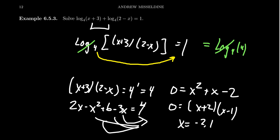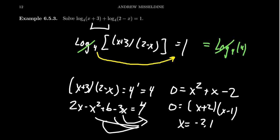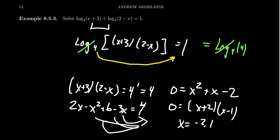We should check both solutions. For x equals negative 2: the arguments become negative 2 plus 3 equals 1, and 2 minus negative 2 equals 4 — both positive, no domain issues. Log base 4 of 1 plus log base 4 of 4 equals 0 plus 1 equals 1. That checks out. For x equals 1: arguments are 1 plus 3 equals 4, and 2 minus 1 equals 1. Log base 4 of 4 plus log base 4 of 1 equals 1 plus 0 equals 1. Both solutions x equals negative 2 and x equals 1 are valid.